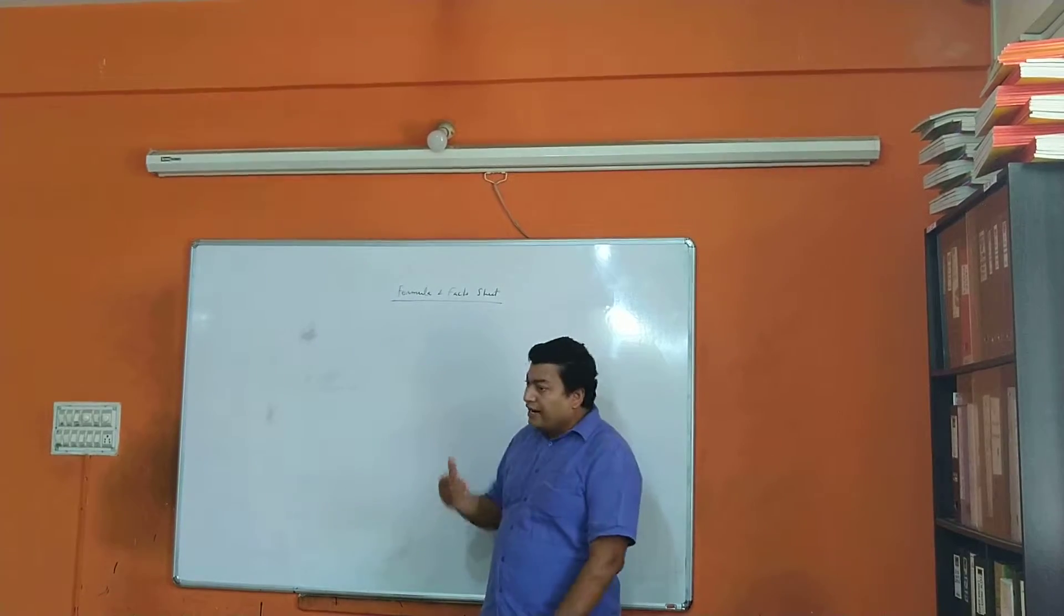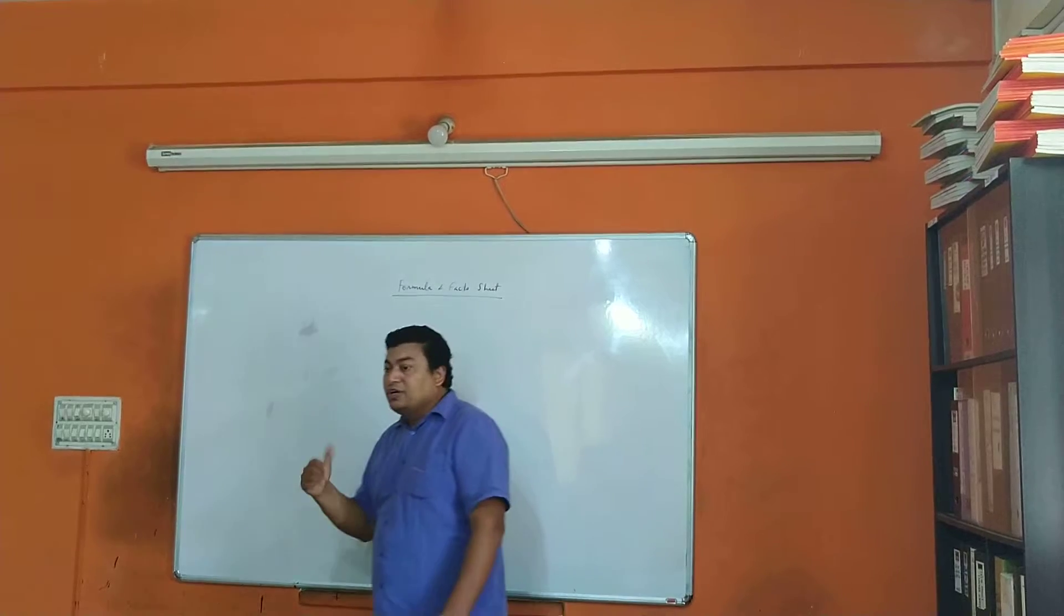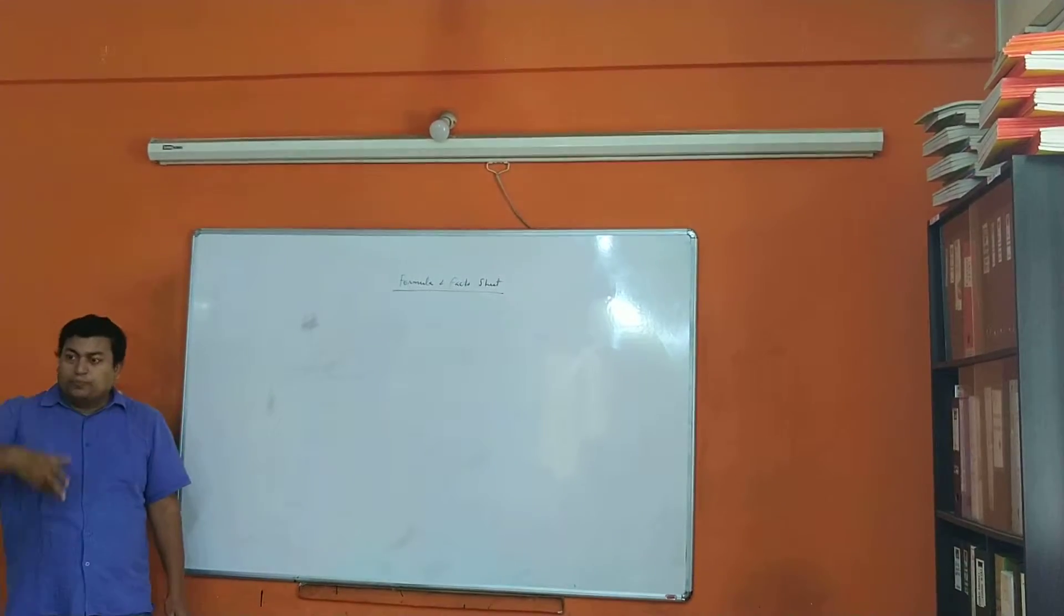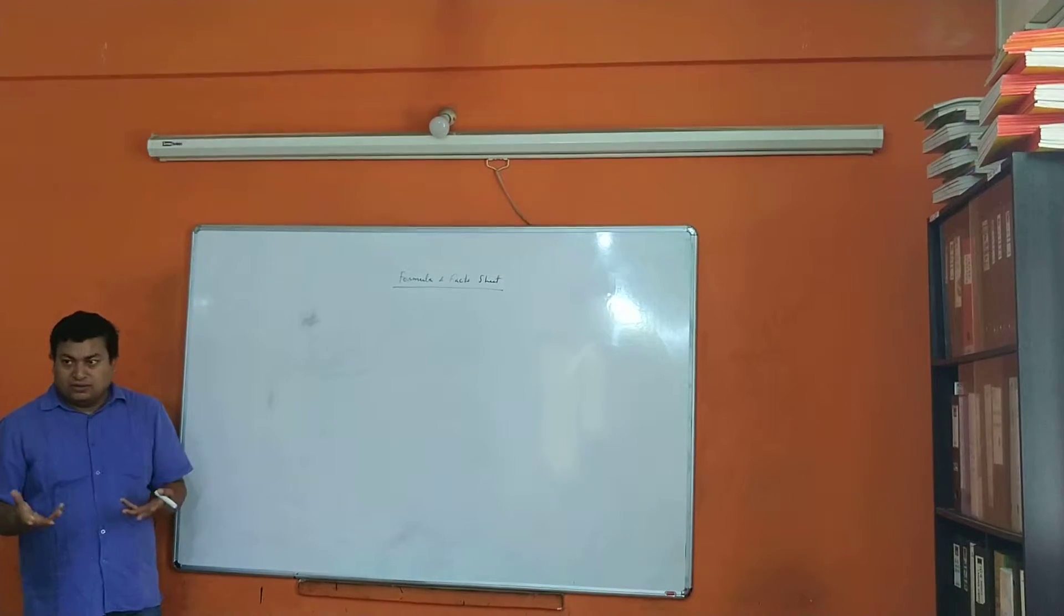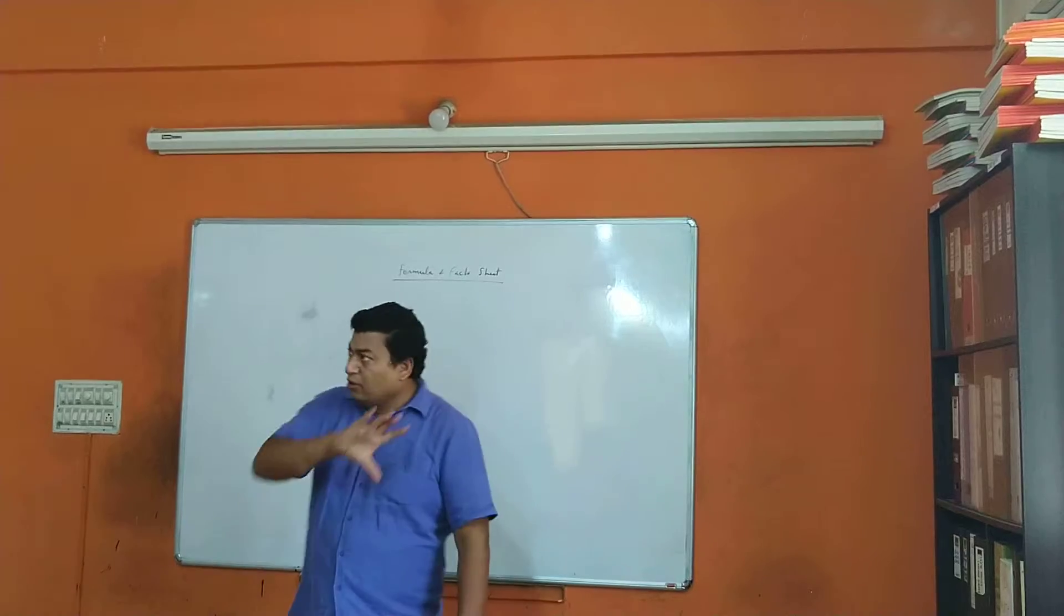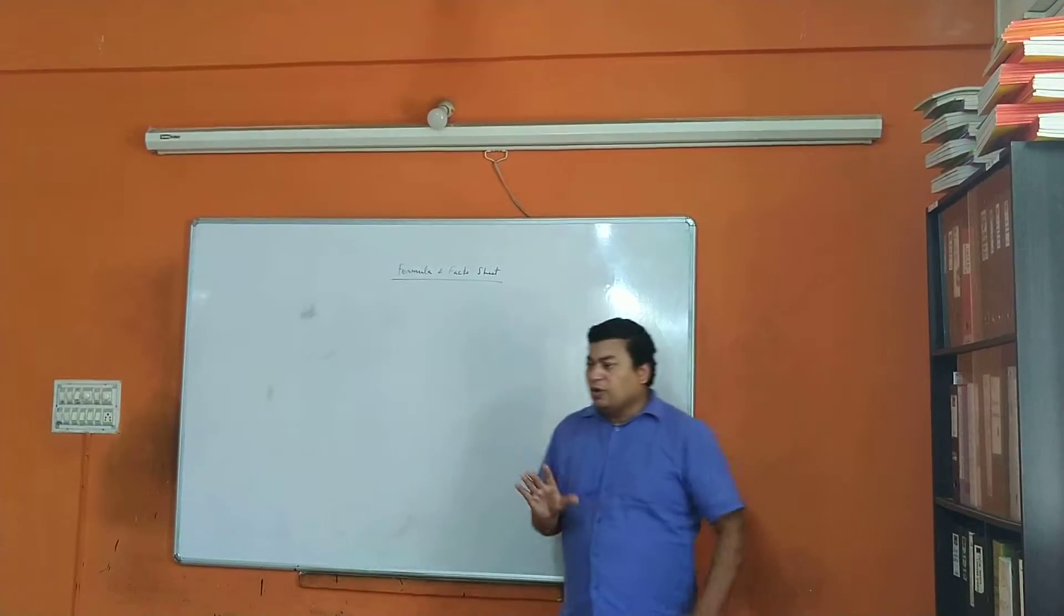In chemistry, the trend of decreasing or increasing behavior of properties in a period, in a row - these are facts that we should write. In organic chemistry formulas are there. So in all three subjects, there will be a lot of formulas and facts.